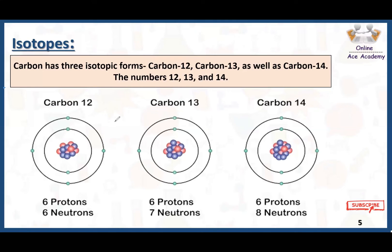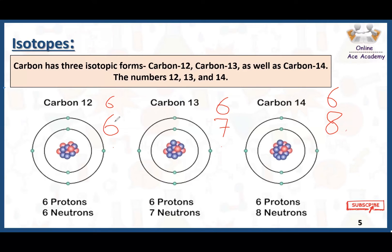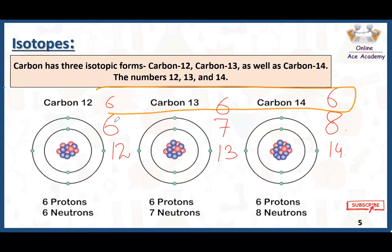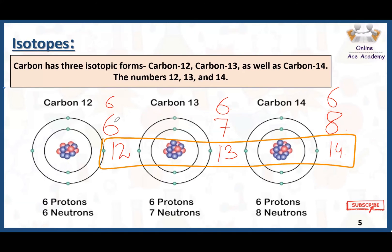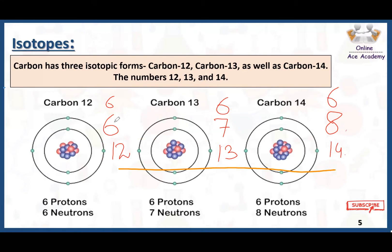So to summarize: carbon-12 has six neutrons, carbon-13 has seven neutrons, and carbon-14 has eight neutrons. The atomic number of all three carbons is six, while the mass numbers are 12, 13, and 14 respectively. The number of protons is the same across all three, but the number of neutrons is different. When the number of neutrons differs among atoms of the same element, these are called isotopes.